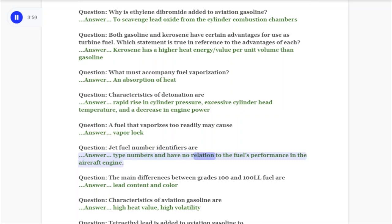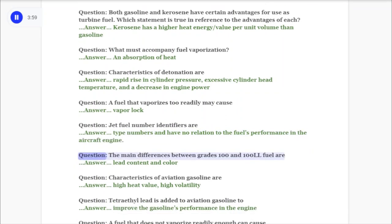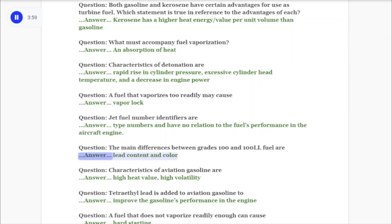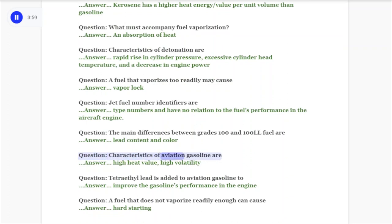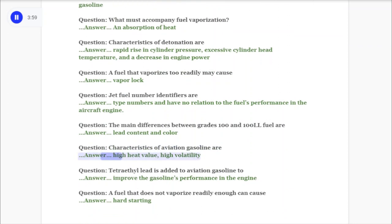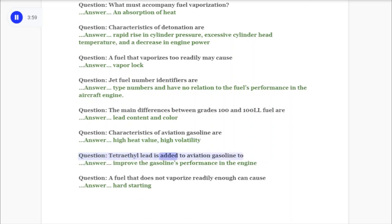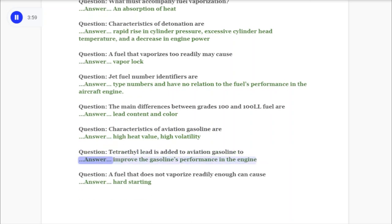Question: Jet fuel number identifiers are? Answer: Type numbers and have no relation to the fuel's performance in the aircraft engine. Question: The main differences between grades 100 and 100LL fuel are? Answer: Lead content and color. Question: Characteristics of aviation gasoline are? Answer: High heat value, high volatility. Question: Tetraethyl lead is added to aviation gasoline to? Answer: Improve the gasoline's performance in the engine. Question: A fuel that does not vaporize readily enough can cause? Answer: Hard starting.